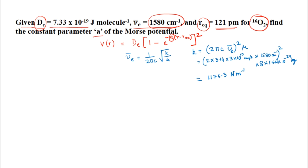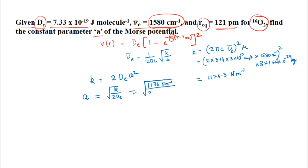From the previous lecture, k = 2 D_E A², so A = sqrt(k / 2D_E). Substituting k = 1176 N/m and D_E = 7.33 × 10⁻¹⁹ J/molecule gives A = sqrt(1176 / (2 × 7.33 × 10⁻¹⁹)) = 2.83 × 10¹⁰ m⁻¹.